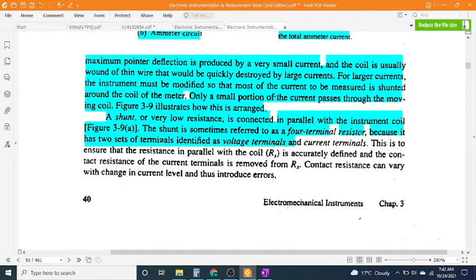It has two sets of terminals identified as voltage terminals and current terminals. This is to ensure that the resistance in parallel with the coil is accurately defined and the contact resistance of the current terminals is removed. Contact resistance can vary with change in current level and thus introduce errors.